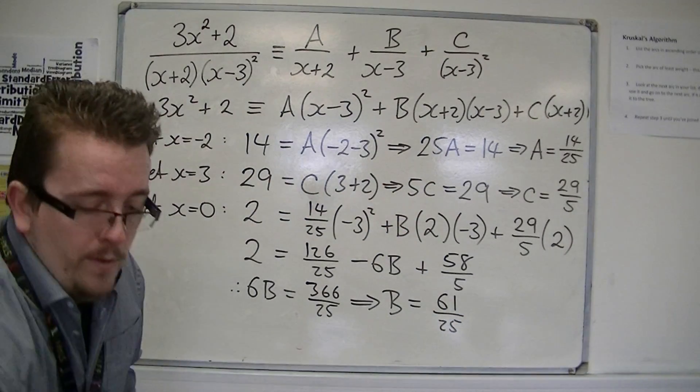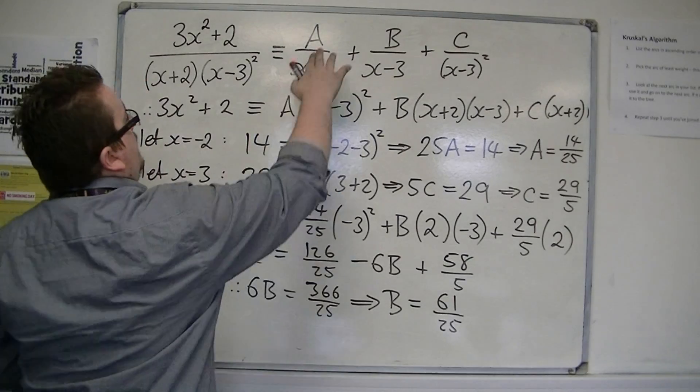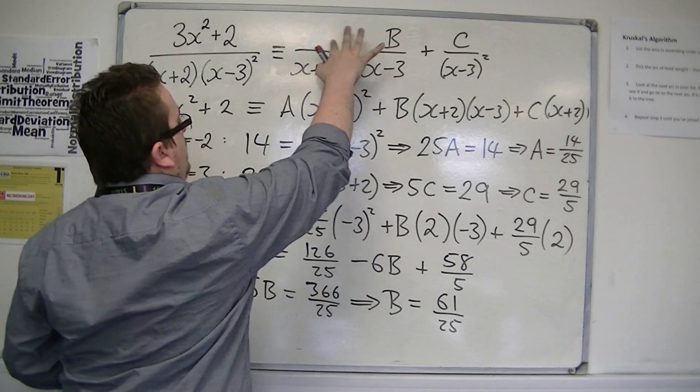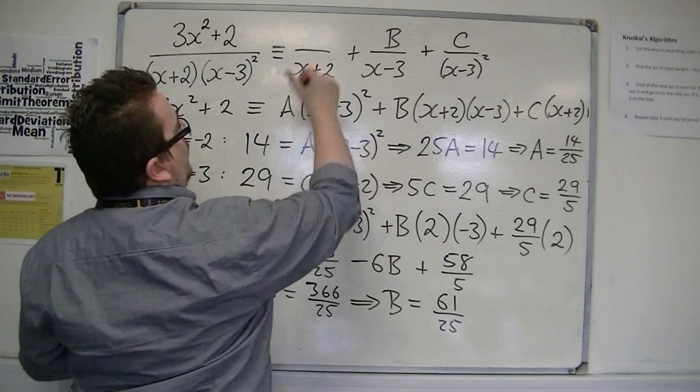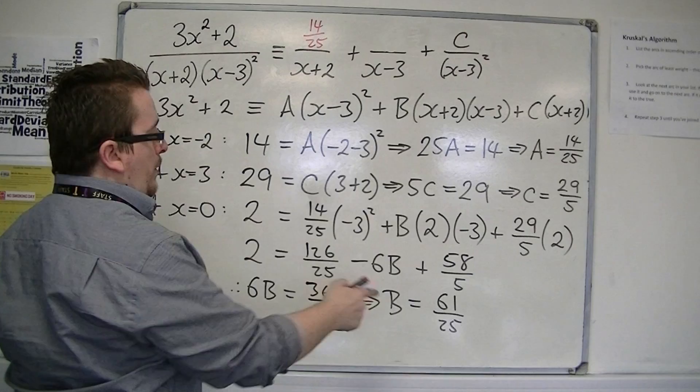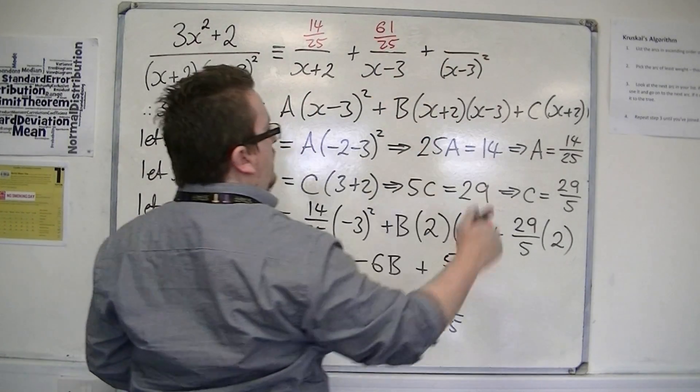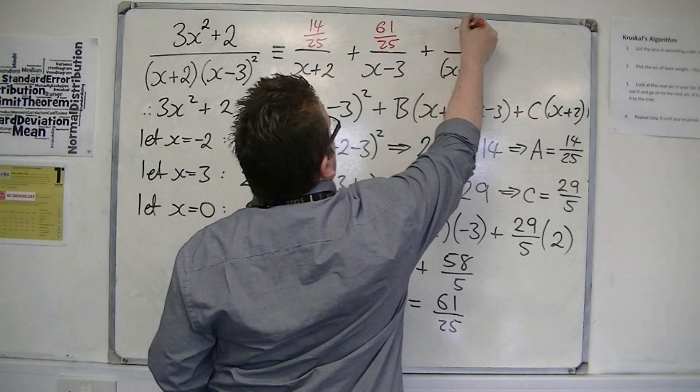So, we now have our three values, our A, B and C. A was 14-25ths, B was 61-25ths, and C was 29-5ths.